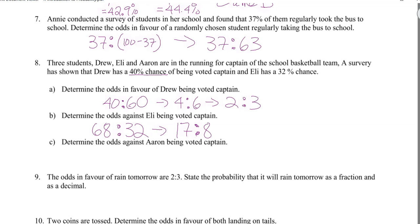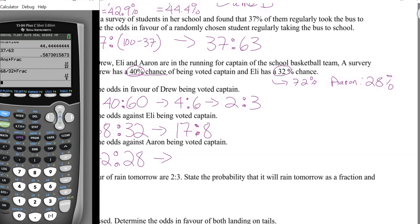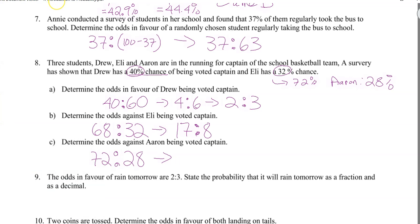Determine the odds against Aaron being voted captain. Drew has 40% and Eli has 32%, which together is 72%, so Aaron has a 28% chance. The odds against Aaron: 28 is favorable (second number) and 72 is unfavorable. So 72 to 28 — using the calculator, that reduces to 18 to 7.